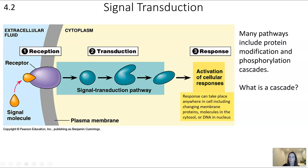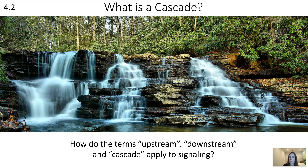To focus on the transduction part of signal transduction, this often includes protein modification and what's called phosphorylation cascades. A cascade is like a waterfall — a series of small steps — where instead of the water going from top to bottom in one big chunk, it proceeds through a series of small steps.